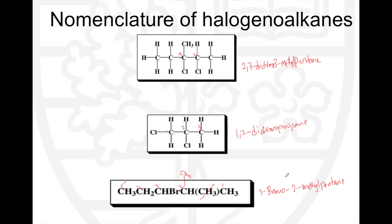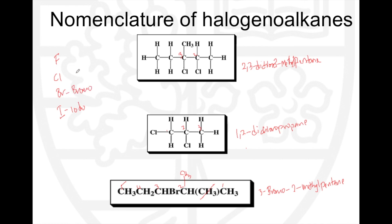It is important to remember to use a hyphen between a number and a letter, and a comma between two numbers that appear next to each other. When adding a halogen to a hydrocarbon, you change the element name: fluorine becomes fluoro, chlorine becomes chloro, bromine becomes bromo, and iodine becomes iodo. You change the name accordingly before incorporating it into the structure.